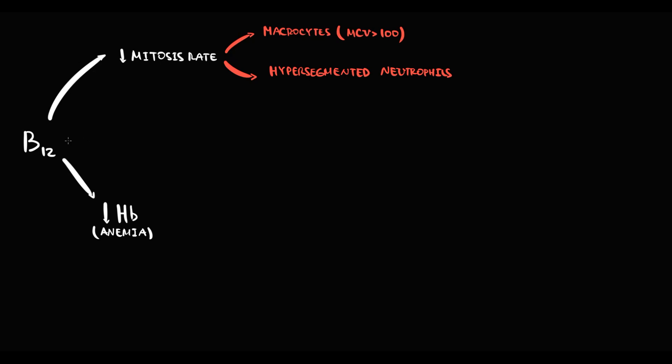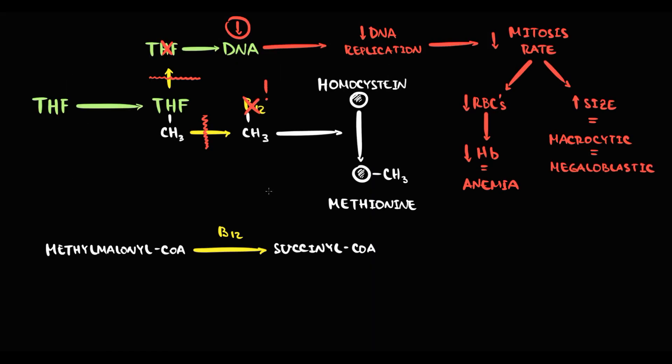In addition to this, B12 deficiency causes demyelination of nerve fiber. To explain this, recall that we require B12 for conversion of methylmalonyl-CoA into succinyl-CoA. So without vitamin B12, this conversion becomes impossible. And as a result, methylmalonyl-CoA accumulates.